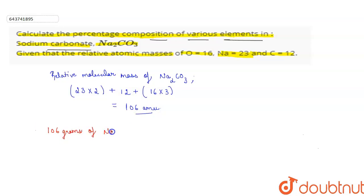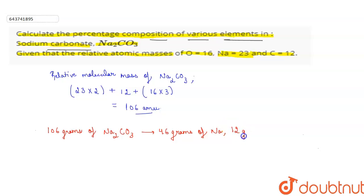So 106 grams of sodium carbonate contains 46 grams of sodium, 12 grams of carbon, and 48 grams of oxygen.